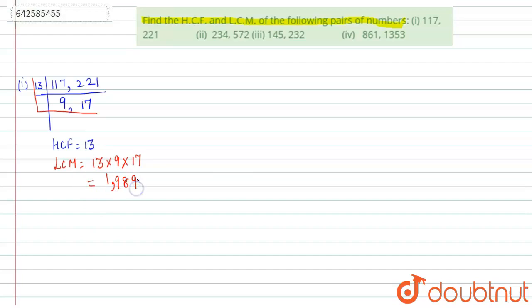So let's move on to the next question. We have 234 and 572. So let's find the LCM and HCF. So they both are even.